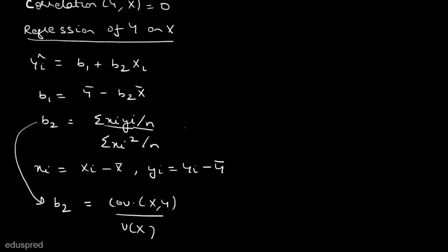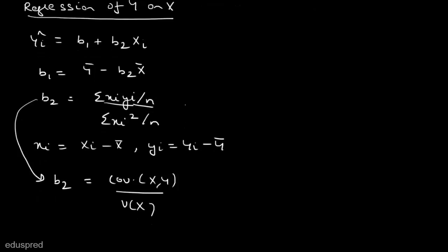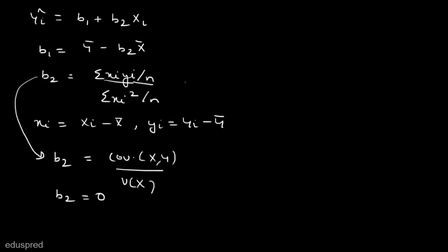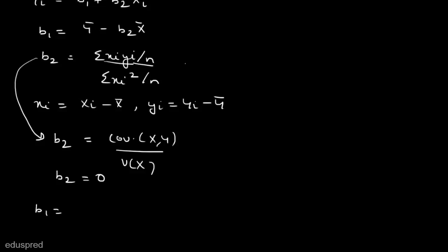We are given that the correlation between x and y is equal to zero, which implies that the covariance between x and y is equal to zero. So b2 equals zero because the numerator is zero. Then b1 = ȳ − b2·x̄ = ȳ − 0, so b1 equals ȳ. The intercept coefficient is ȳ and the slope coefficient is zero.